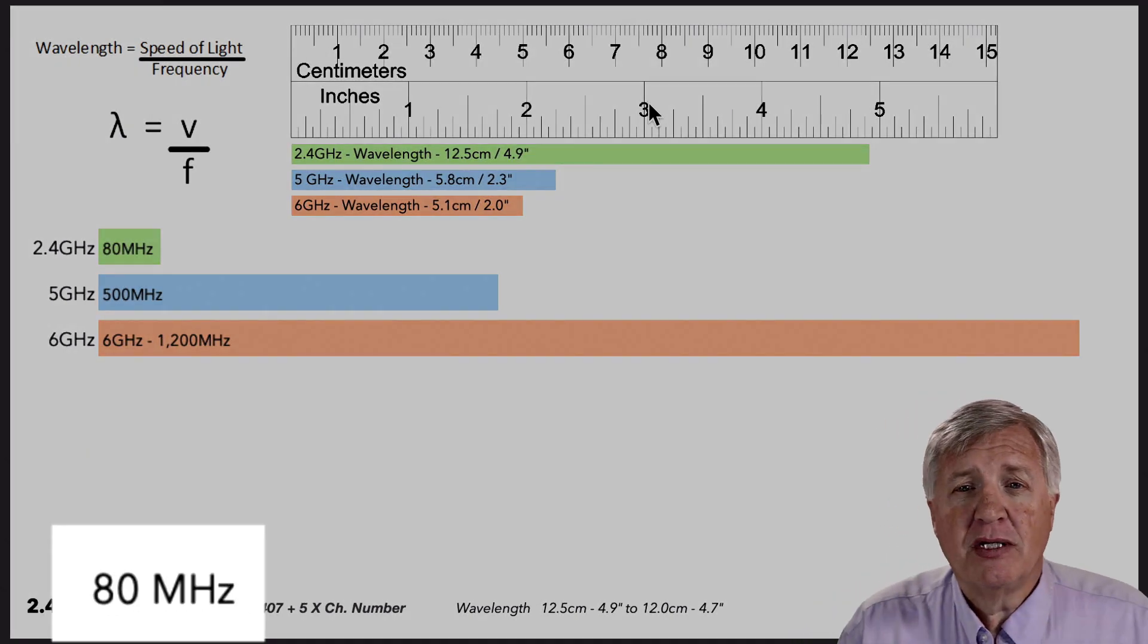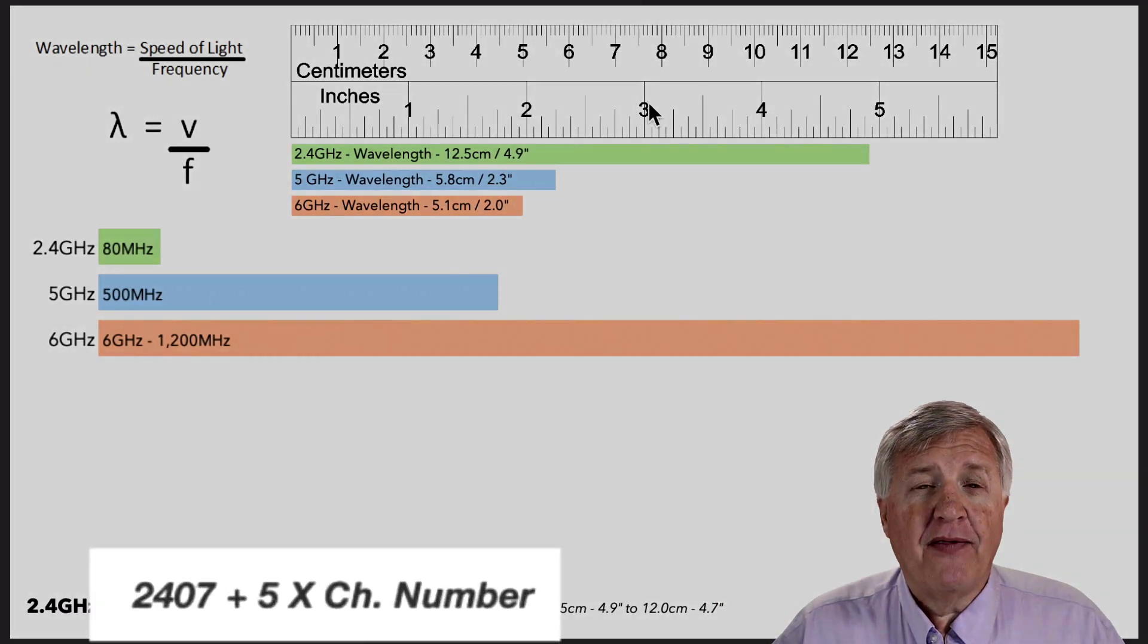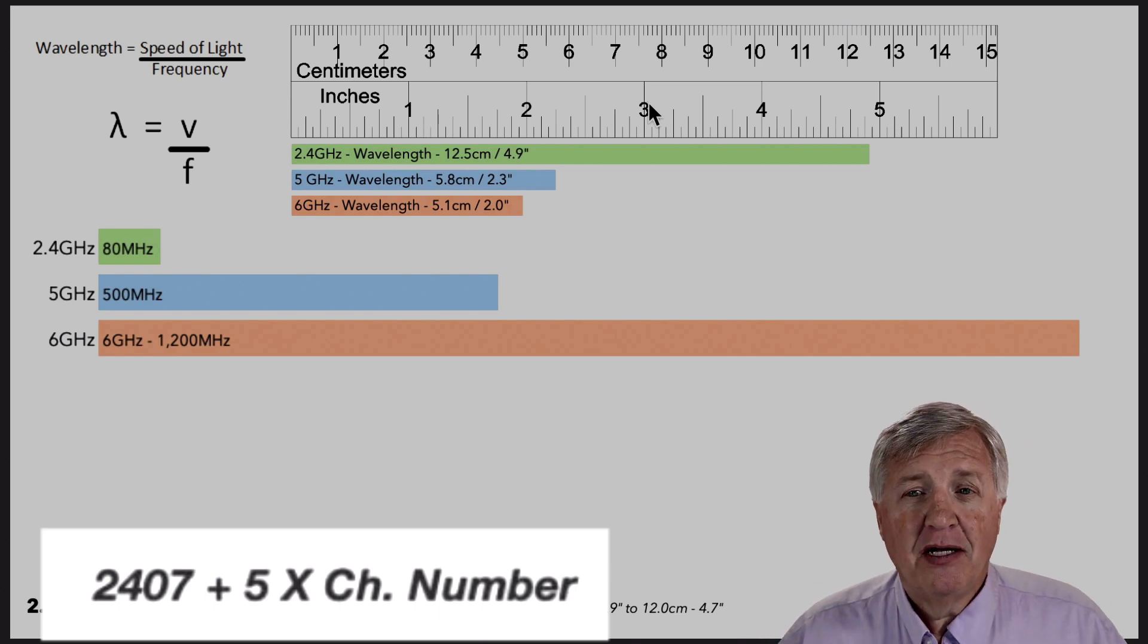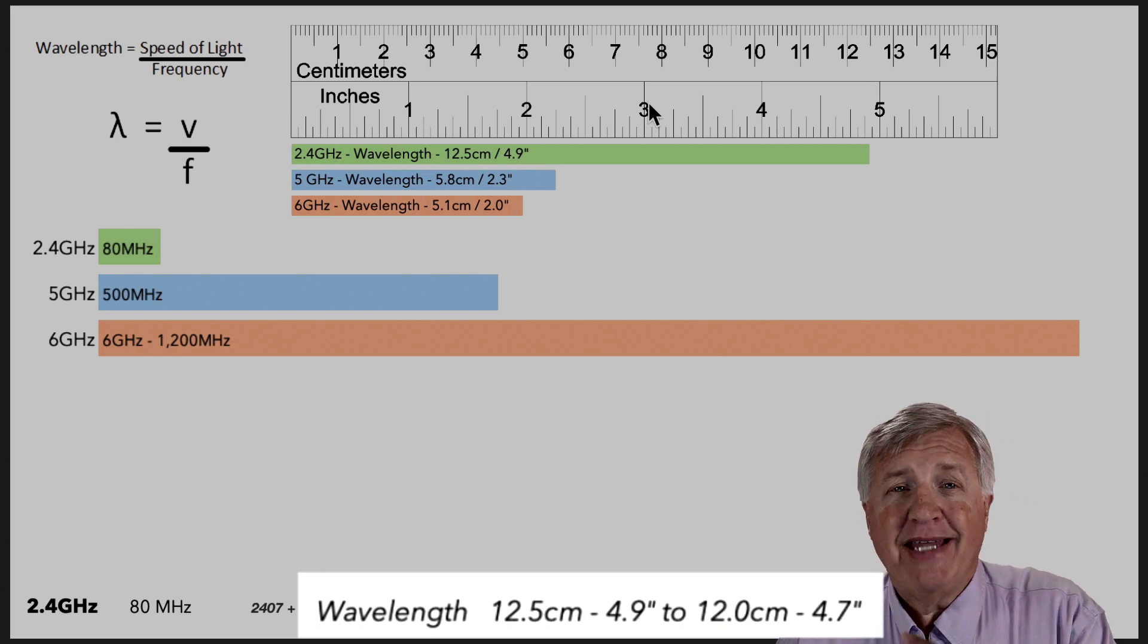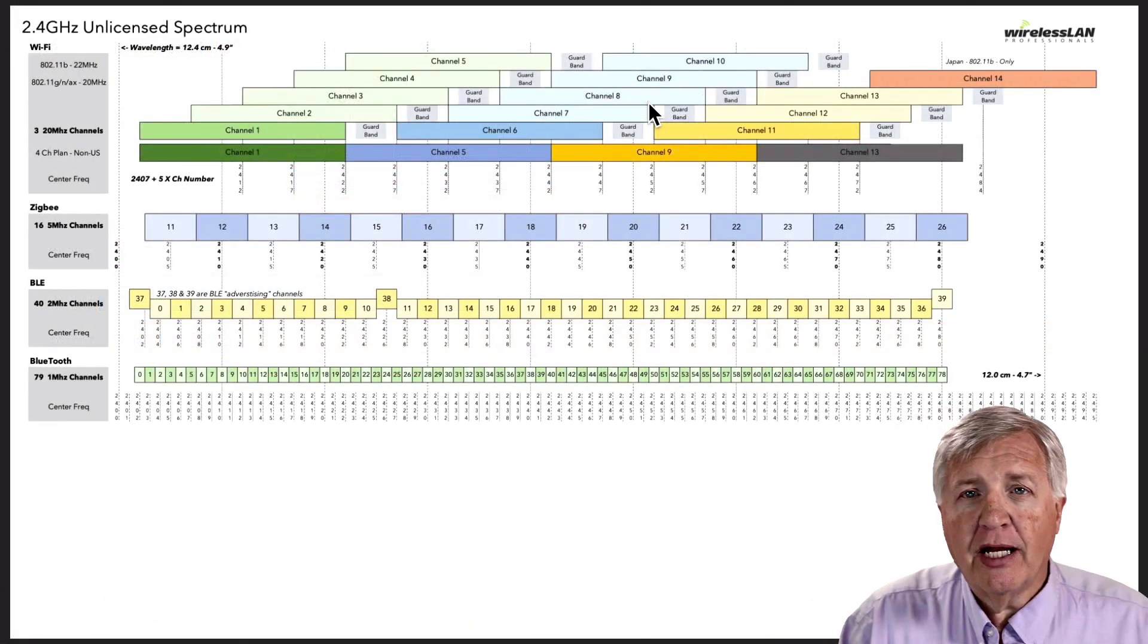Now at the bottom of the page, you can see there's 80 megahertz of channel. And there's a formula: 2.407 plus 5 times the channel number is going to get you the specific frequency you're looking for. And the wavelengths go from about 2.5 centimeters all the way up, because we're going up means the size going down, down to about 12 centimeters.